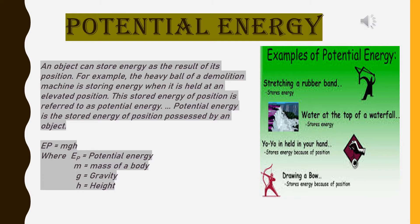If potential energy is equal to EP, then EP is equal to MGH, where M is equal to mass of a body, G is equal to gravity or gravitational attraction and H is equal to height. Now, please see the diagram. Here, some examples of potential energies are there.